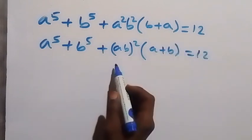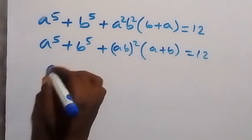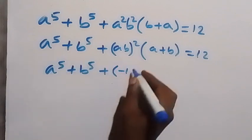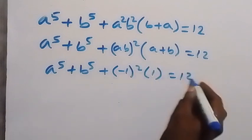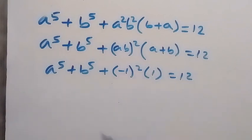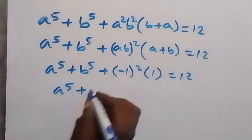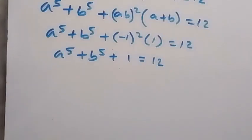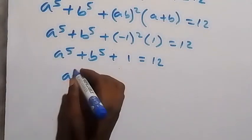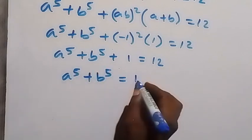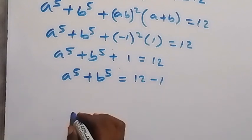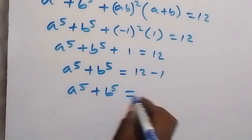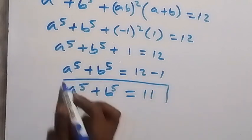We already have ab equals minus 1 and a plus b equals 1. Substituting: a raised to power 5 plus b raised to power 5 plus (minus 1) squared times 1 equals 12. Since minus 1 squared is 1, and 1 times 1 is 1, we get a raised to power 5 plus b raised to power 5 plus 1 equals 12. Taking 1 to the right hand side: a raised to power 5 plus b raised to power 5 equals 12 minus 1, therefore equals 11.